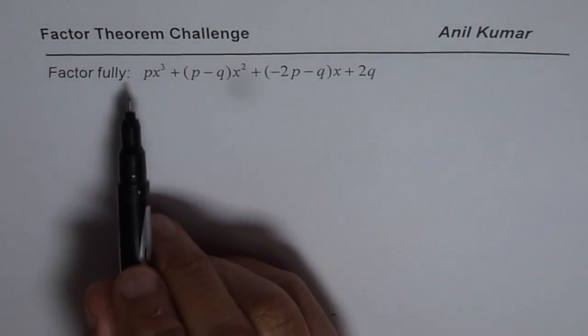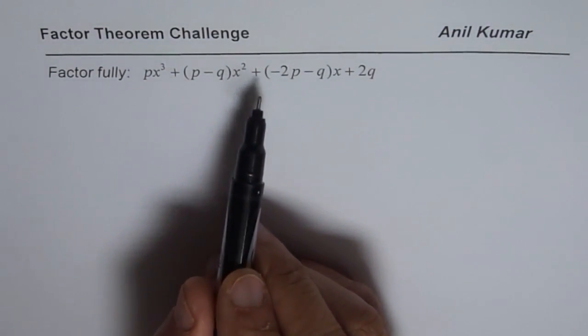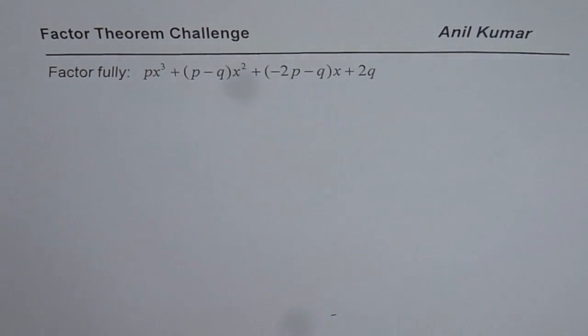The question here is, factor fully px³ + (p-q)x² + (-2p-q)x + 2q. Now, how will you factor this?